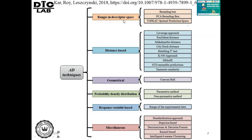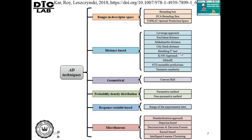Various methods exist for applicability domain determination. Distance-based methods include leverage, Euclidean distance, Mahalanobis distance, city block distance, Tanimoto coefficient, KNN, DmodX, and STD ensemble predictions. Geometrical approaches include convex hull calculations. Probability density distribution methods include both parametric and non-parametric approaches. Response variable-based methods use a range of response values. Finally, miscellaneous approaches include the standardization approach, stepwise approach, and various machine learning methods. I'll discuss some of these methods in detail.